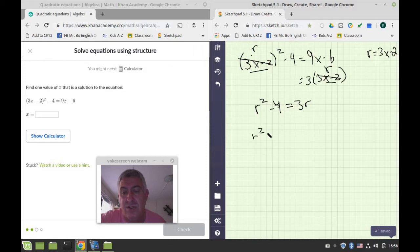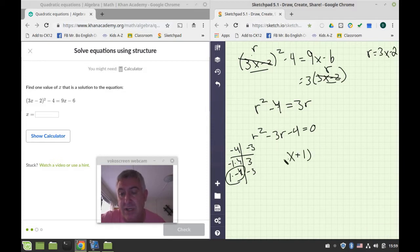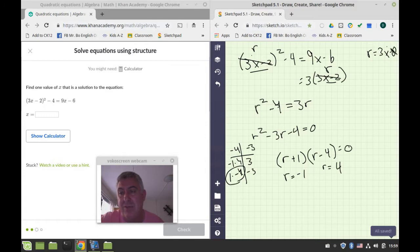Or r squared minus 3r minus 4 is equal to 0, so now I want to factor. So I want something that multiplies to be negative 4. 1 times negative 4, and that's negative 3, so here we are, so I've got r plus 1 times r minus 4 is equal to 0, so r is equal to negative 1, or r is equal to 4, and now I want to go back and I want to substitute. What is r?